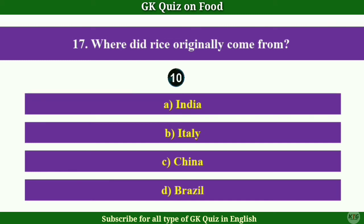Question No.17: Where did rice originally come from? Answer C: China.